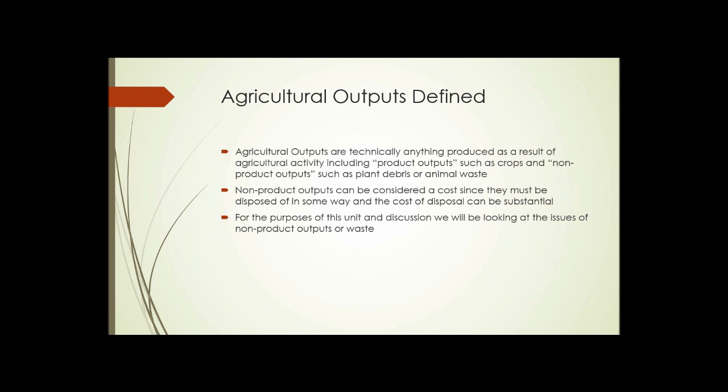This includes both the product outputs — those things that are the desired end product of agriculture, the crops, the animals, the eggs, whatever it is that is desired — but also includes the non-product outputs such as plant debris or animal waste, that sort of thing.